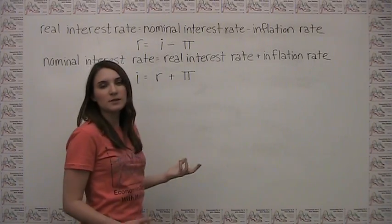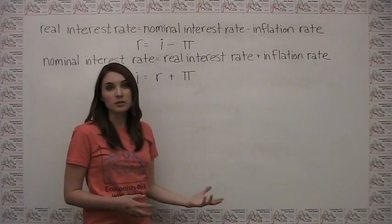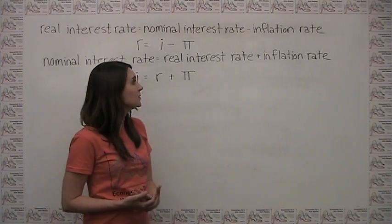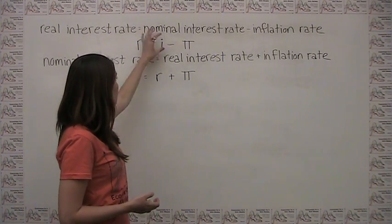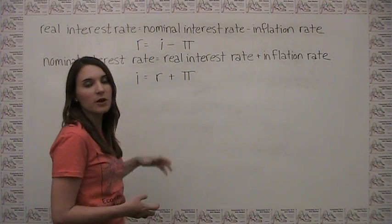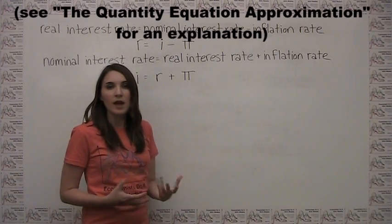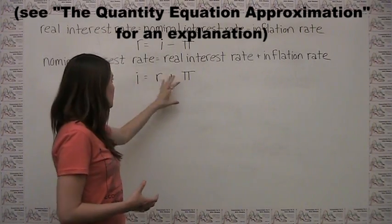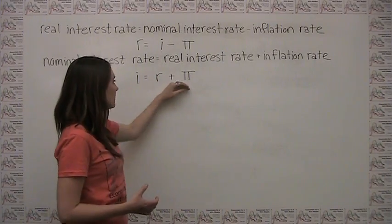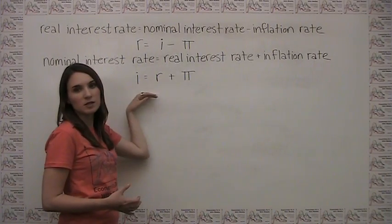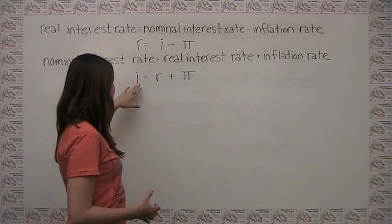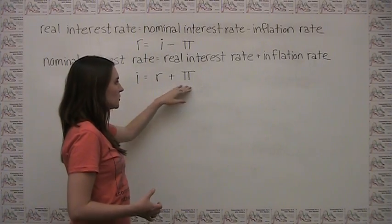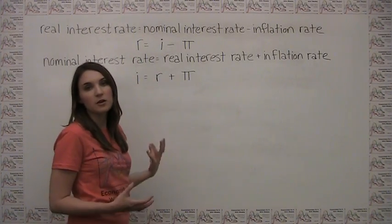These equations are sometimes referred to as the Fisher equation, and it's important to understand that these additive relationships are actually a bit of an approximation. However, it's a very close approximation, given that the magnitude of numbers that we're usually talking about for our nominal interest rates, our real interest rates, and our rates of inflation are very small.